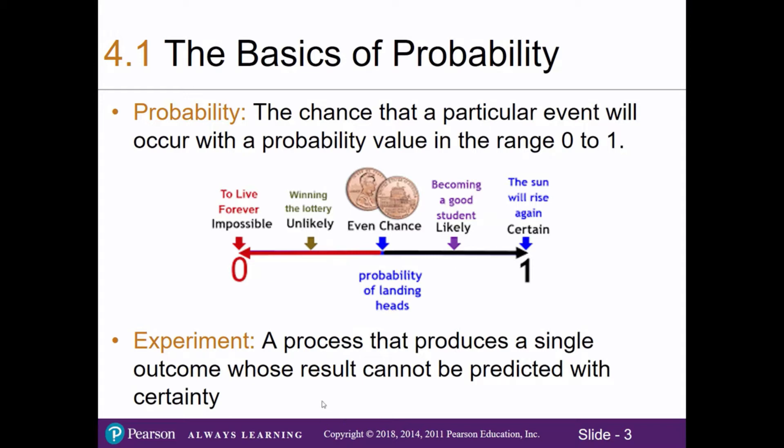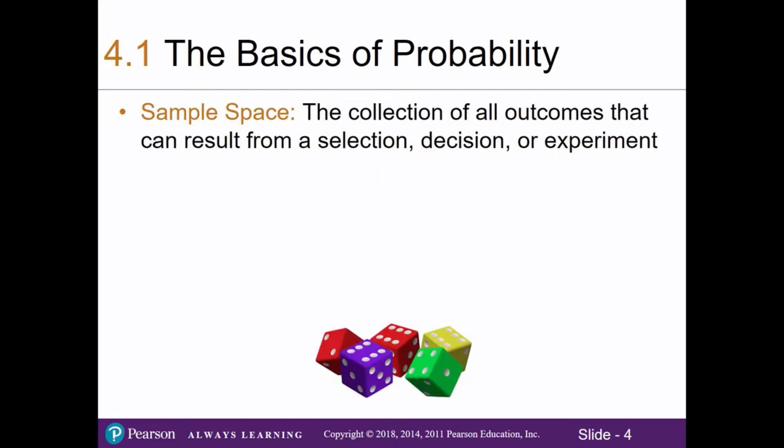You learned in Chapter 1 about an experiment — a process we go through to find an outcome we can't predict. That's why we run the experiment. In terms of probability we have something called a sample space, which is a collection of all the possible outcomes that can result from a selection, decision, or experiment.